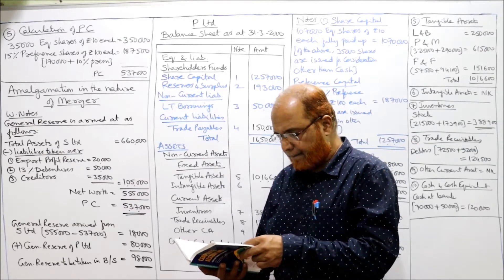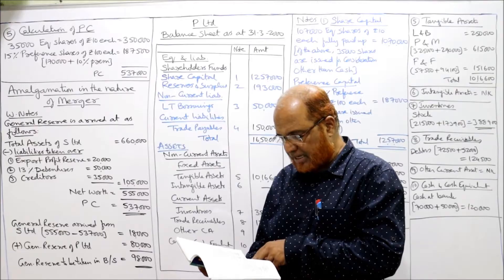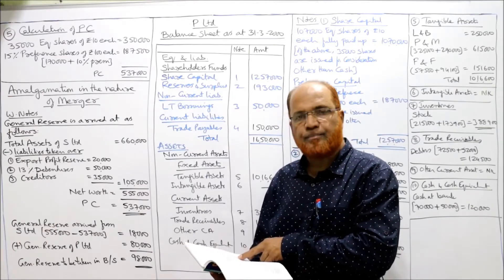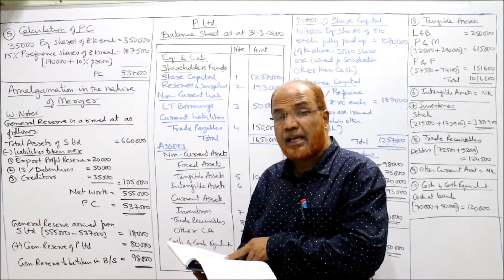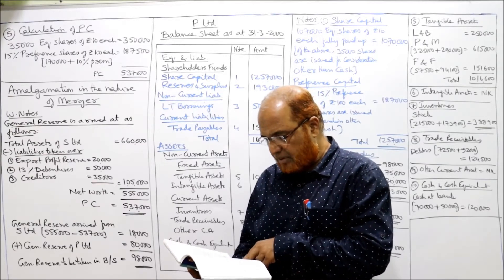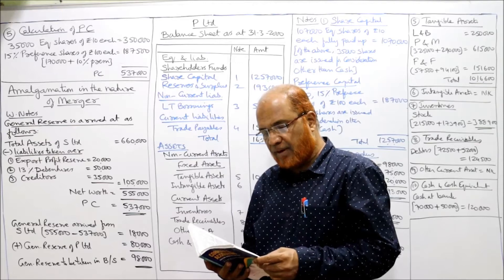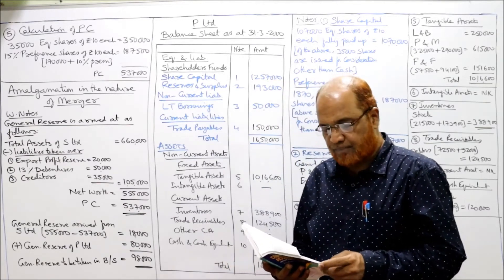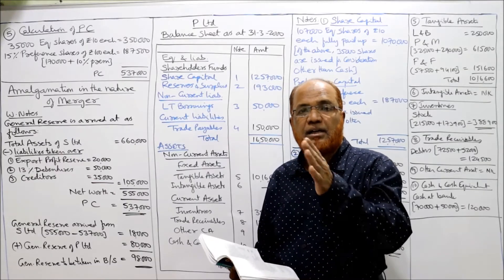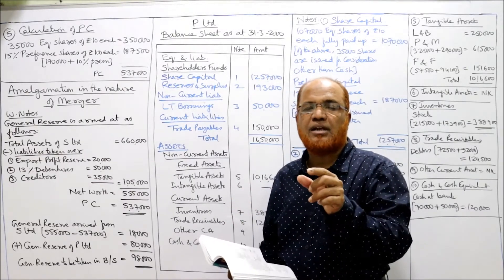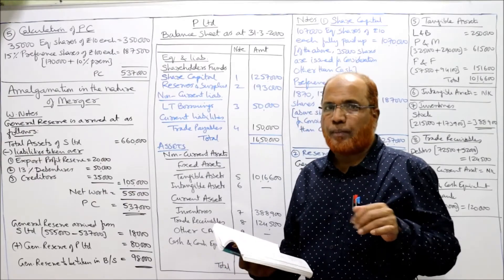The fifth problem: the following are the balance sheets of P Limited and S Limited as on 31st March 2000. Share capital of ₹10 each — ₹7,20,000 for P Limited and ₹3,40,000 for S Limited. 40% preference share capital of ₹100 each, fully paid, only in S Limited. General reserve, export profit reserve — in S Limited only. P&L account in both companies. 13% debentures in S Limited only. Creditors in both companies. Land and building, plant and machinery, furniture, stock, debtors, bank — the balance sheet is complete. P Limited takes over S Limited on 1st April 2000. S Limited is the transferor/vendor company and P Limited is the transferee/purchasing company. S Limited company winds up.